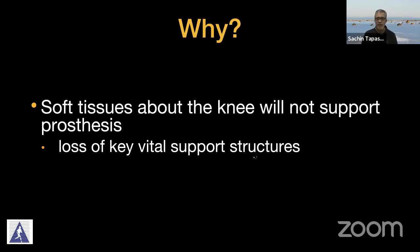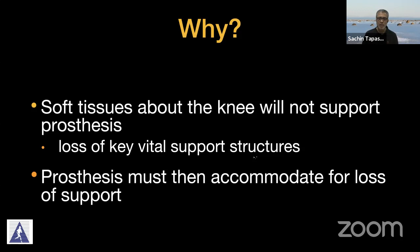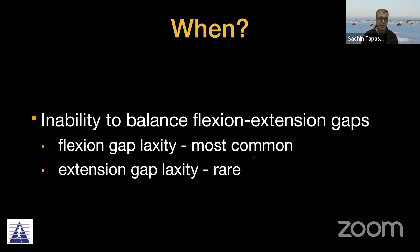Why do we require constraint? Key vital structures are not doing their proper role and we need to do something more. Soft tissue laxity will then be compensated by certain mechanical implant characteristics which bring about this constraint. These essentially accommodate the loss of support in the current scenario that you're dealing with.